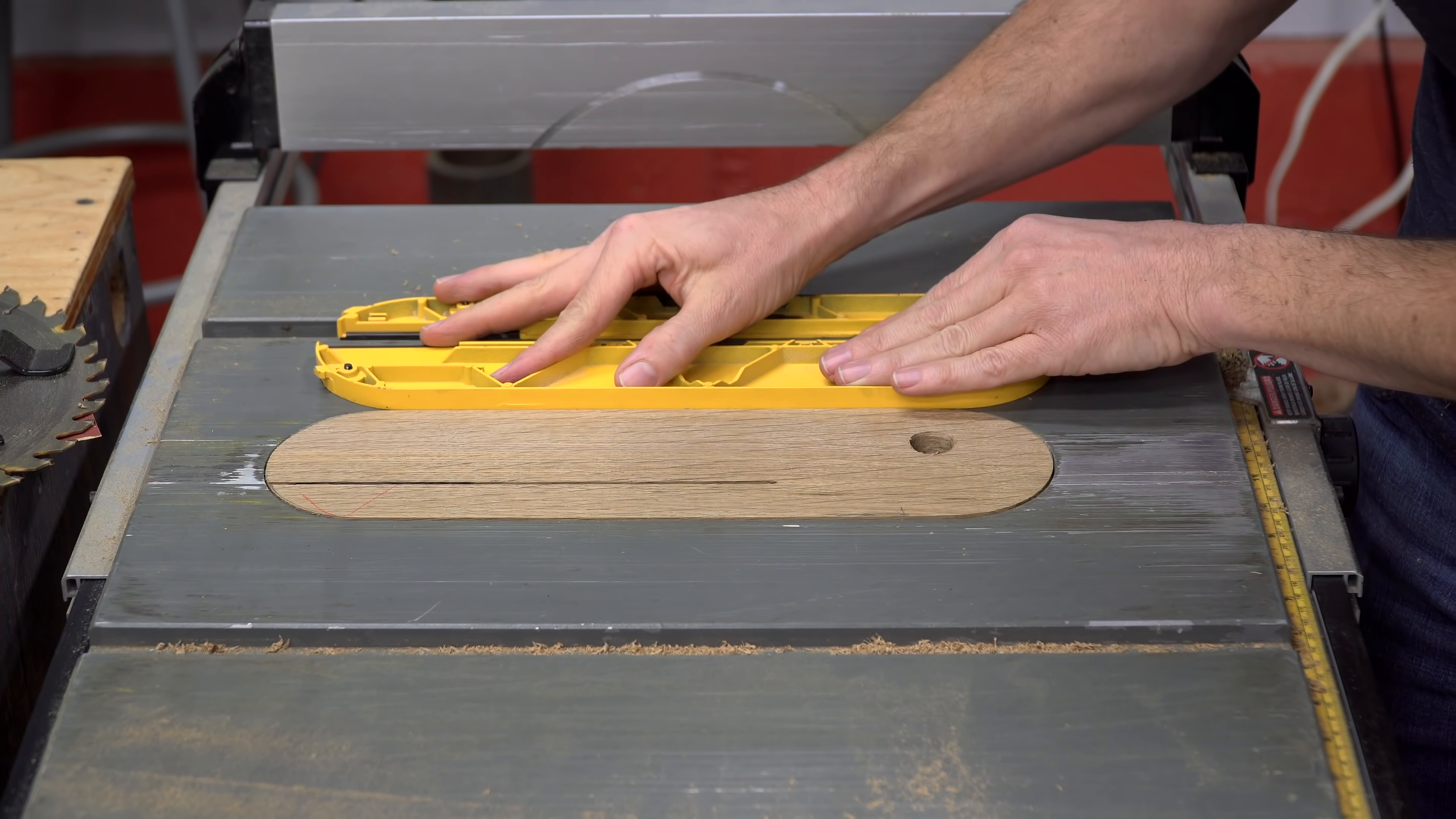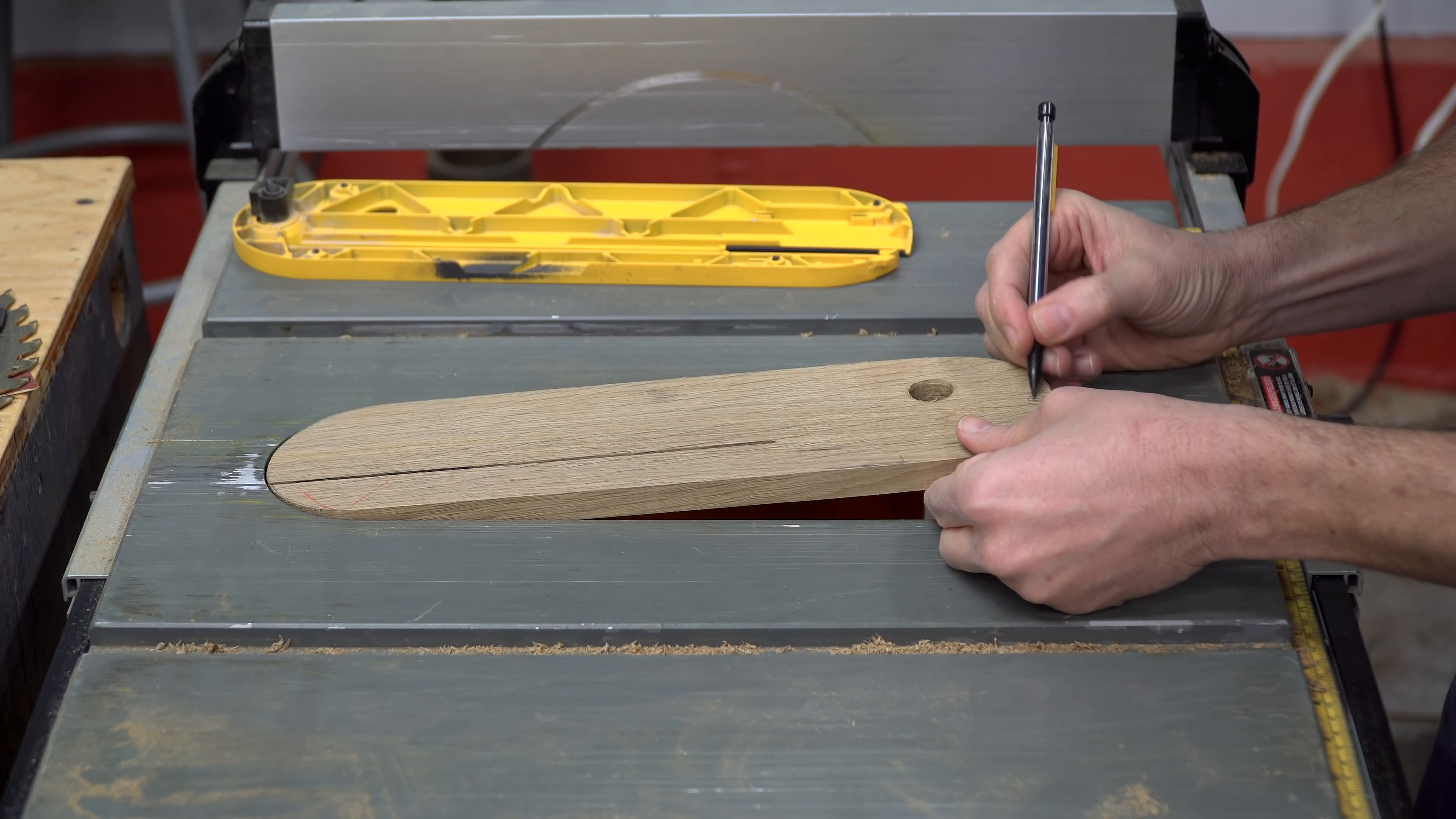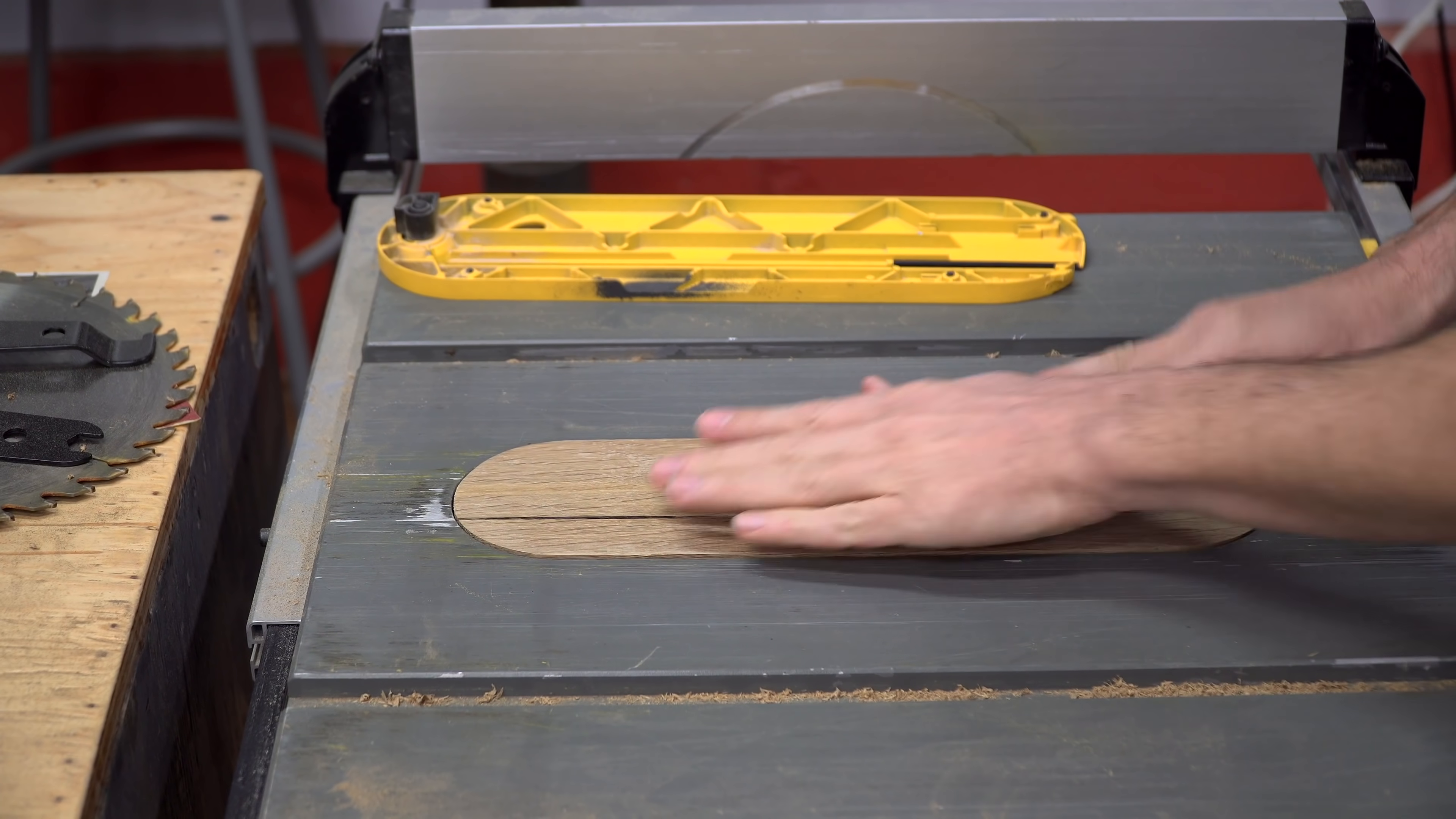At this point, the insert was still slightly thicker than it needed to be. Again, this is so I can fine tune the bottom of the insert since the support tabs are all at different depths. I marked the locations of the support tabs and then began removing small amounts from the bottom side of the plate at those locations until the top side of the plate was perfectly flush with the table.